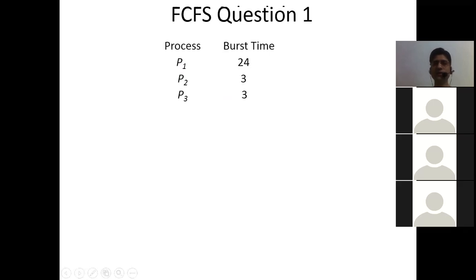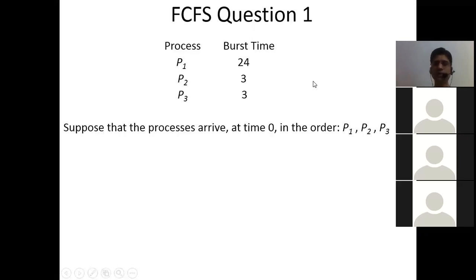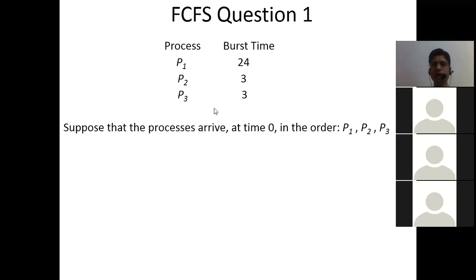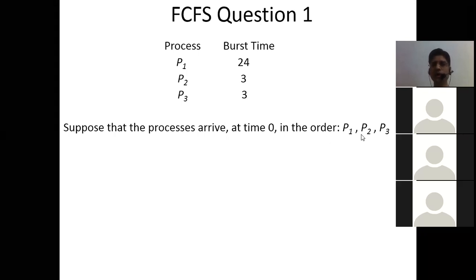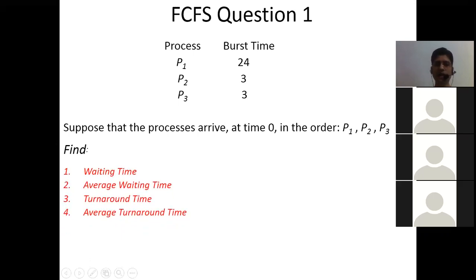Let's do a numerical. Suppose we have three processes with burst times: P1=24, P2=3, P3=3. All processes arrive at time zero in the order P1, P2, then P3. We need to find four things: Waiting Time, Average Waiting Time, Turnaround Time, and Average Turnaround Time.